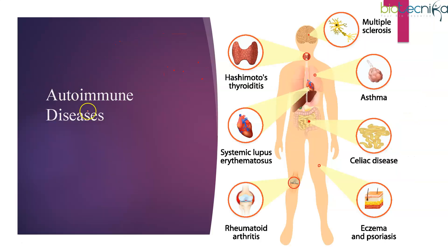Now let us see the various autoimmune diseases caused by autoimmunity. The first disease is Hashimoto's thyroiditis, where thyroid hormone production slows down. Autoantibodies bind to the enzymes that help in thyroid hormone production, leading to a deficiency of thyroid hormones. Common symptoms include fatigue, swelling of the thyroid gland, and weight gain.